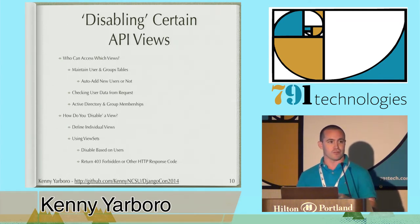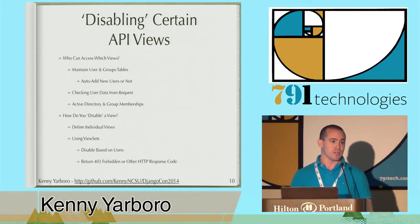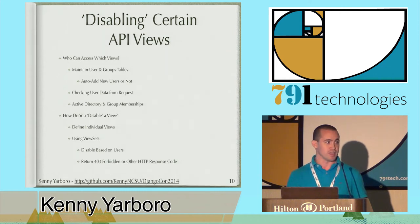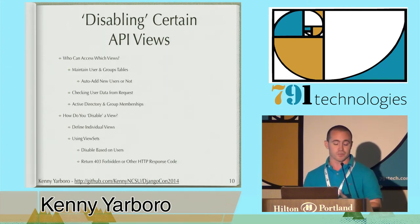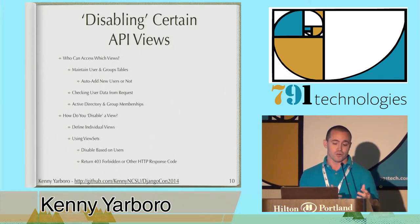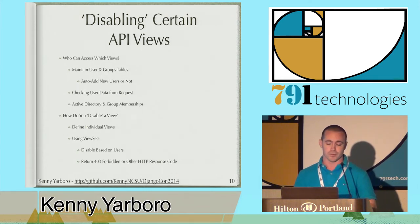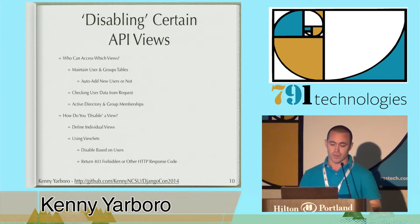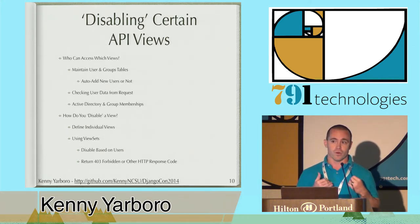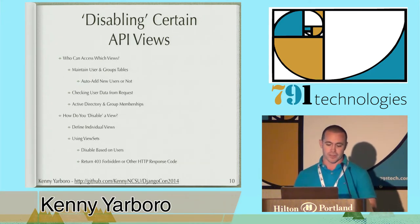Django allows you to set whether or not you want to automatically add a new user, and if you choose to do so, you can customize how that user object gets created. So if someone tries to get to your application and Django doesn't know who they are, it'll build that user object the way you told it to. For us, we didn't want that — if someone came to our application and we didn't know who they were, we just didn't want them to use it. So we turned that off.